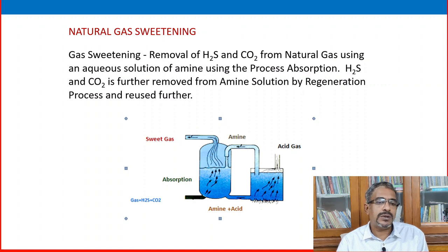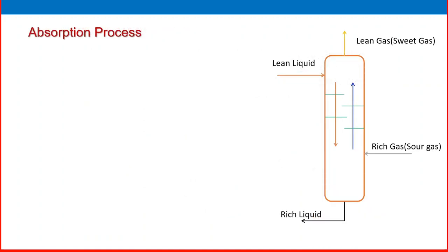Before discussing natural gas sweetening in detail, let us have a quick look at the absorption process. A vertical tower has internals we will discuss in coming slides. A gas component enters from the bottom and a liquid component enters from the top; counter-current flow is maintained. Liquid flows down through the internals, rich gas moves from bottom to top, liquid is released from the bottom, and lean gas is released from the top.